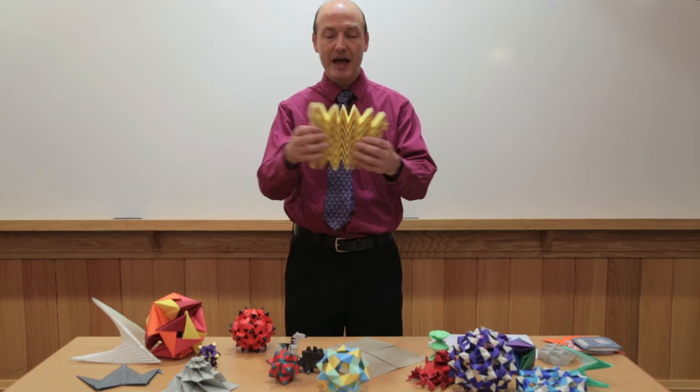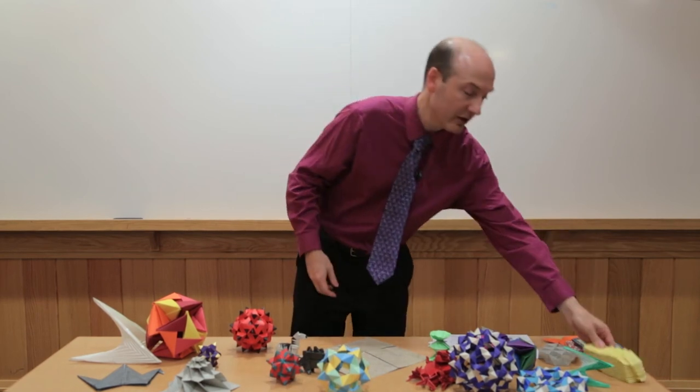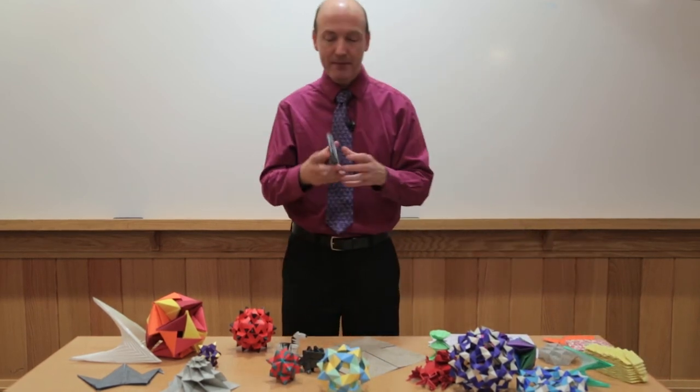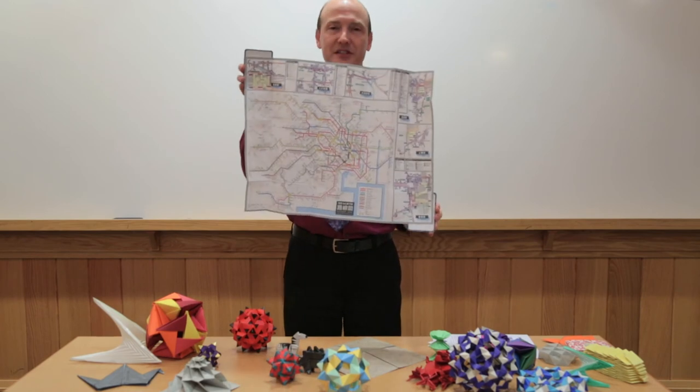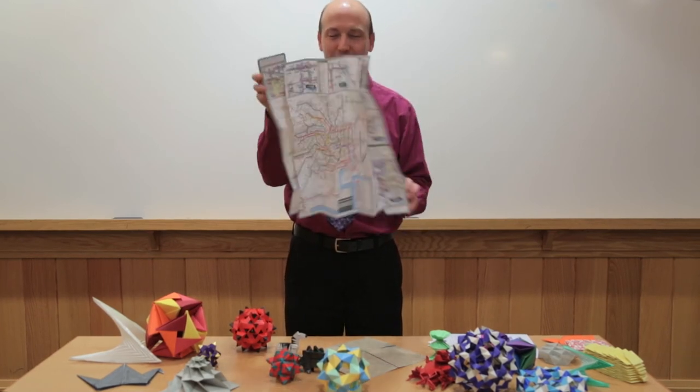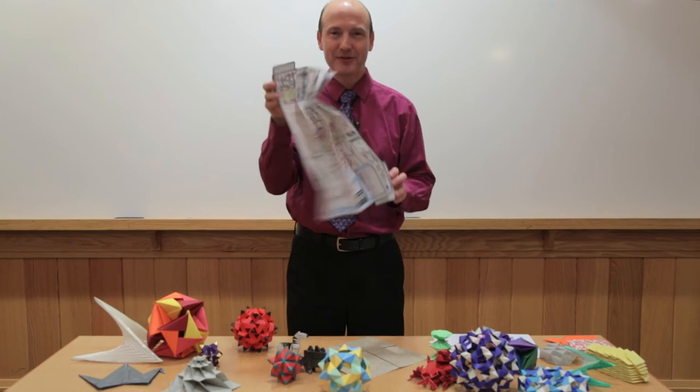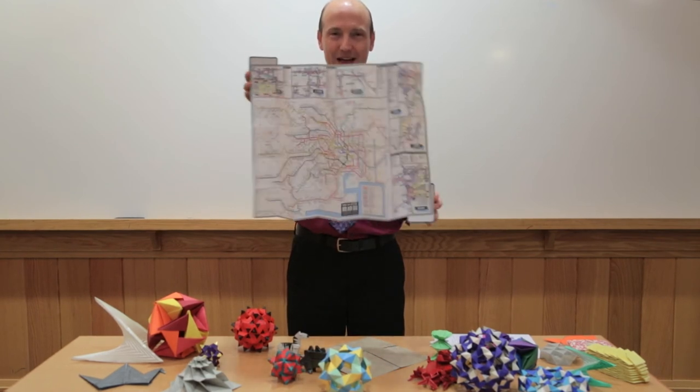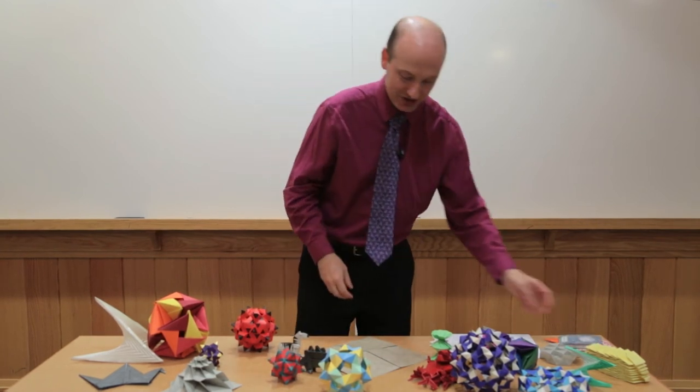So this is also called the Miura Map Fold because it works great for maps. Here is a map of the Tokyo subway system made out of Miura Ori. And it unfolds and folds so nicely. I wish all maps were made this way. Wouldn't life be so much better? Yeah. But they don't do that. Maybe because it's hard to fold.